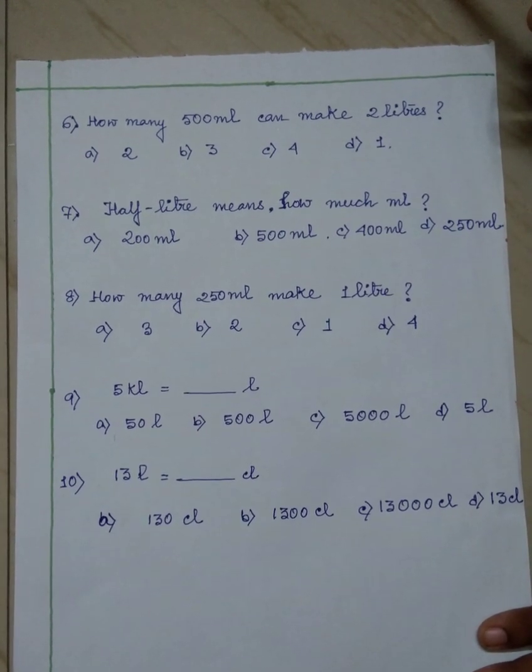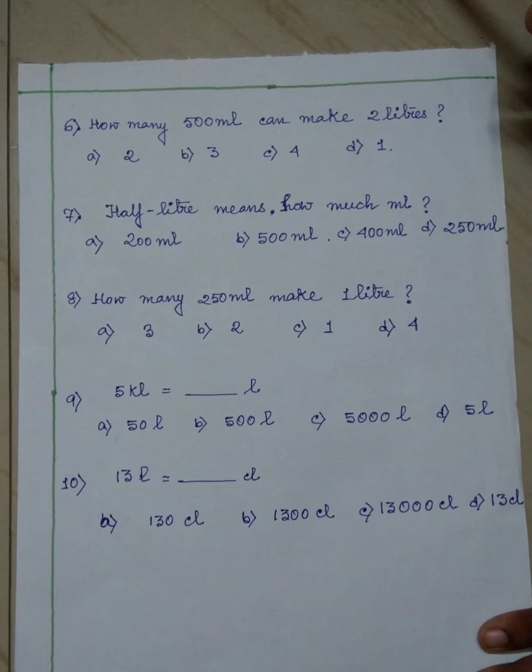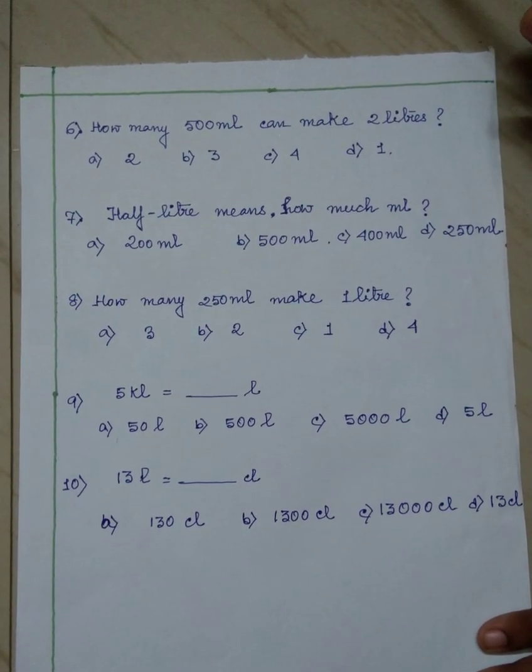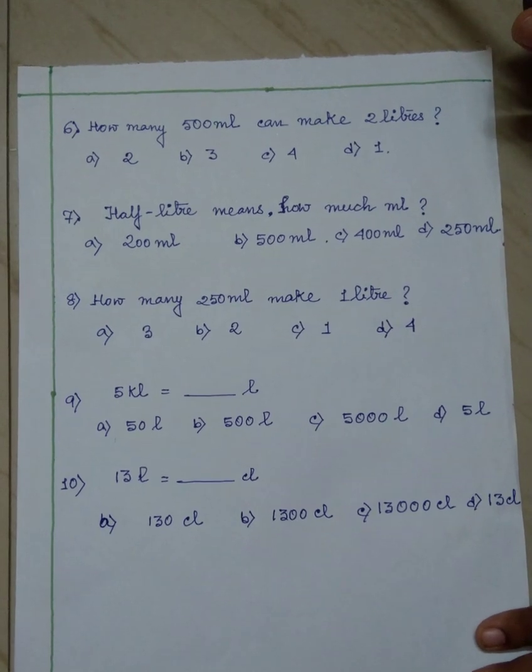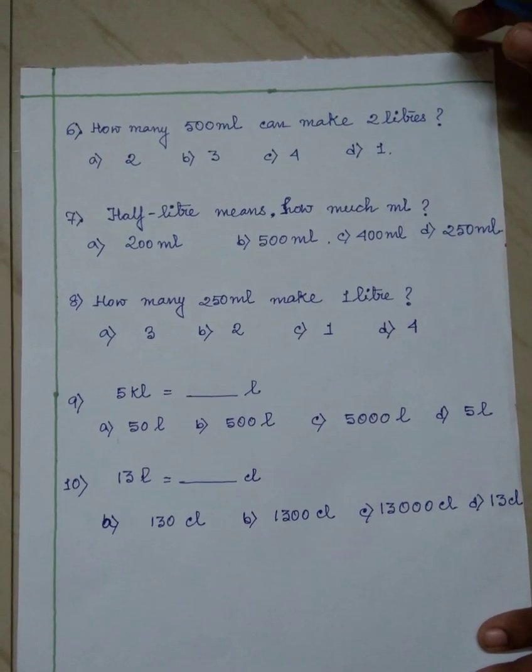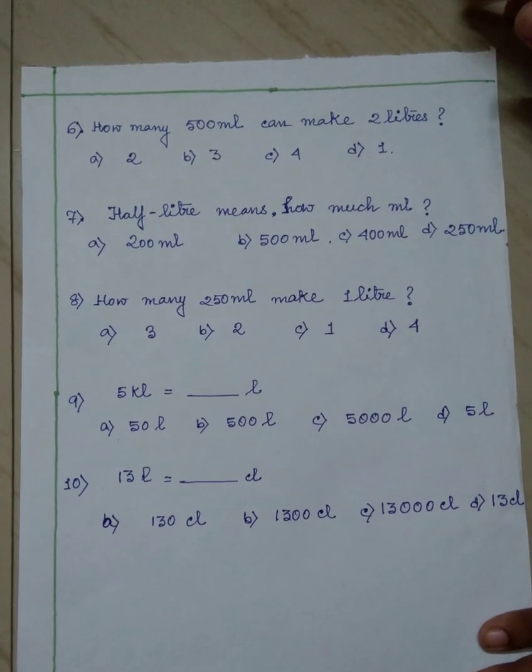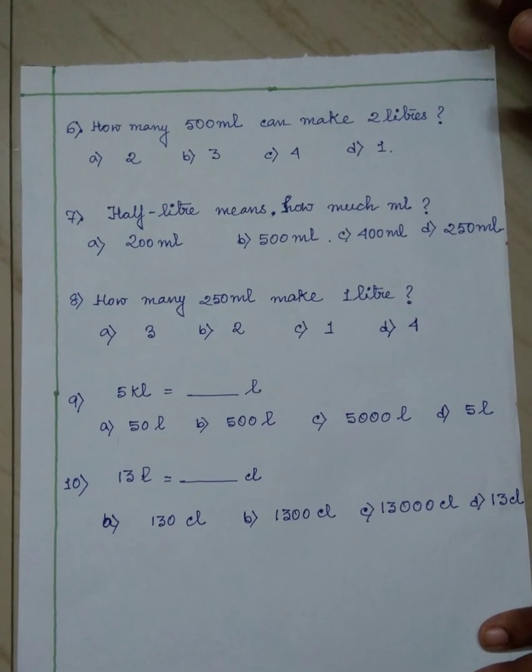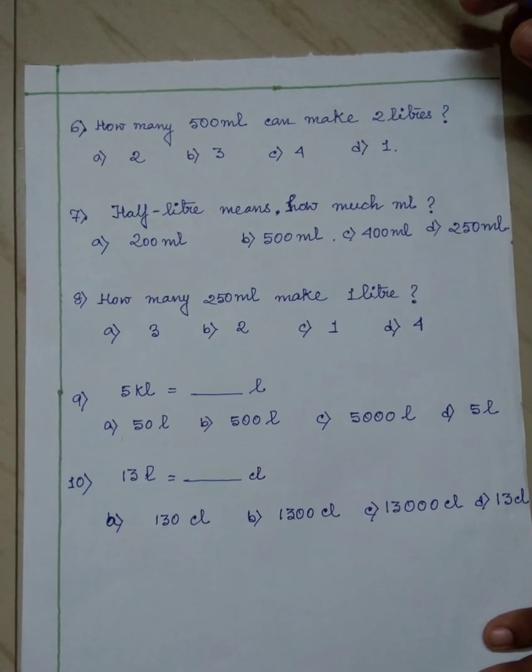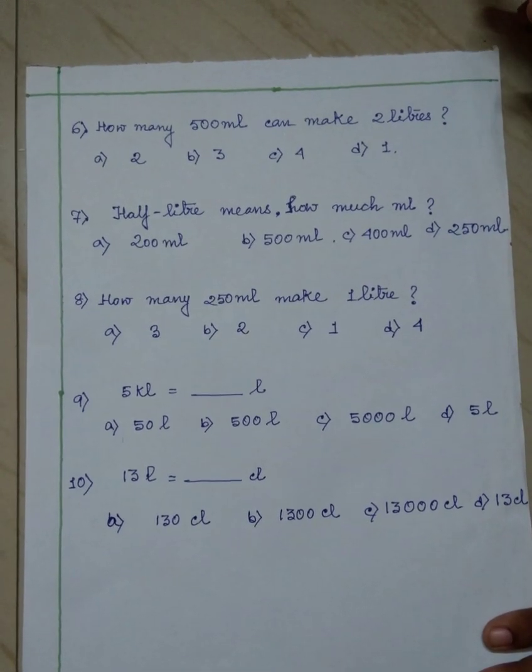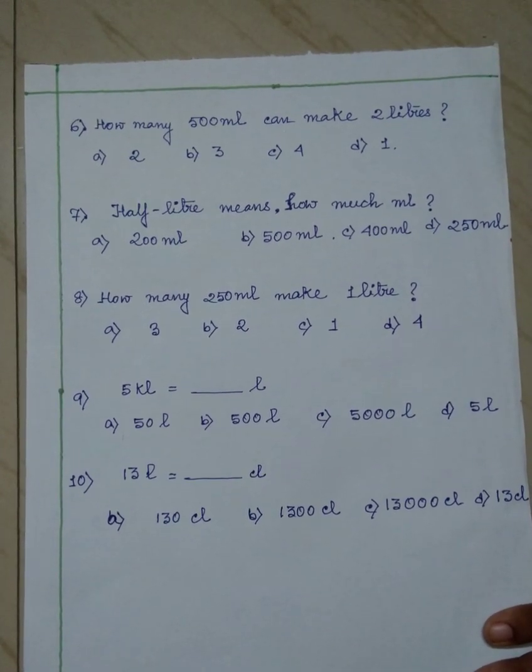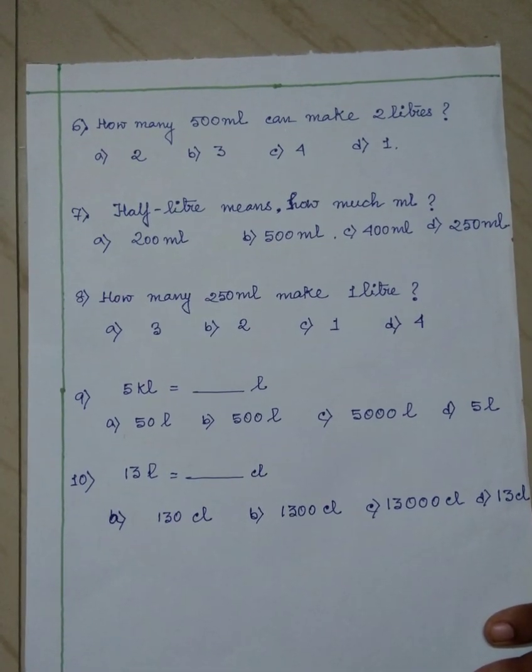Next, nine number question is 5 kilolitre equals to how much litre? You know the series, kilolitre, hectolitre, decolitre, centilitre, millilitre. So the kilolitre is at the topmost. So here the question is 5 kilolitre equals to how much litre? Here the options are 50 litre, 500 litre, 5000 litre or 5 litre.